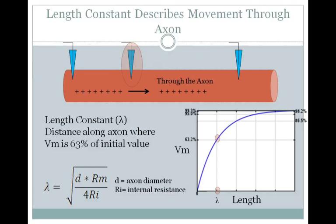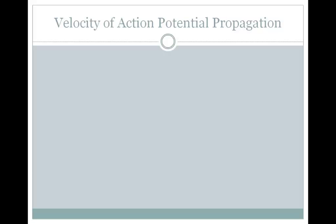Lambda is equal to the square root of the axon diameter times membrane resistance divided by 4 times the internal resistance, or Ri.